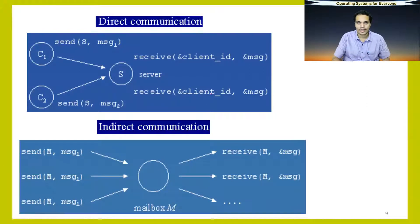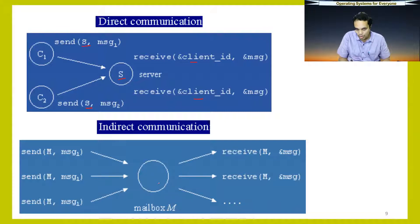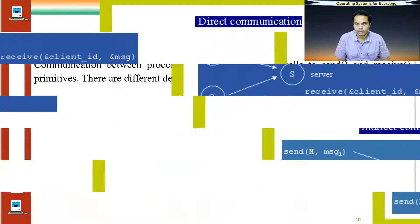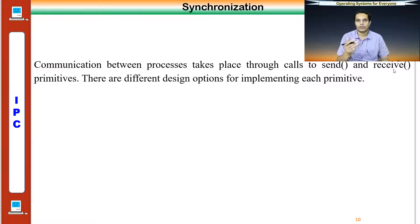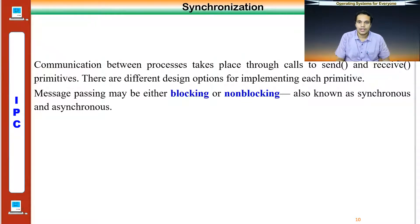With direct communication, clients C1 and C2 wanting to send to a server must explicitly mention the send and receive primitives with the client IDs. With indirect communication, C1 and C2 can share one mailbox and whichever process wants to send a message puts it into the mailbox, and the owner receives messages from it. The communication between processes takes place through send and receive primitive calls, and we have different design options for how this works.